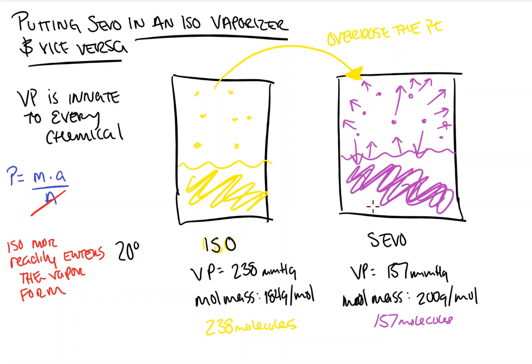Conversely, putting sevo into an iso vaporizer, you would underdose the patient — for the opposite reason. Sevo is harder to liberate from liquid to volatile gaseous form, and when you put it in a container calibrated for a molecule that more readily enters the vapor phase, it means it's going to have a harder time liberating those molecules from liquid to vapor.